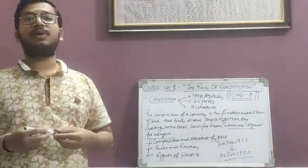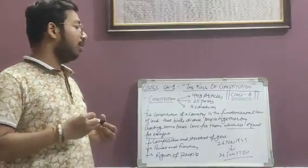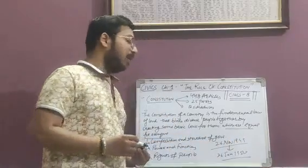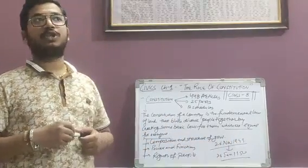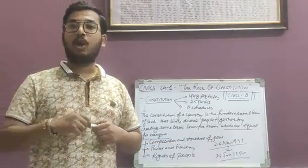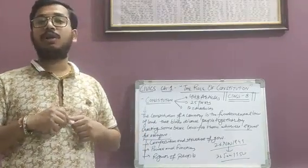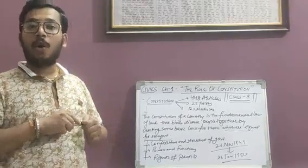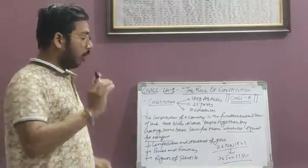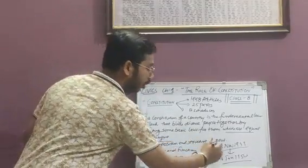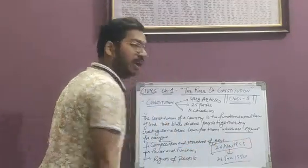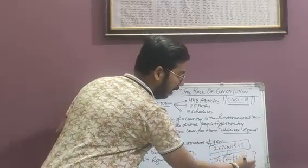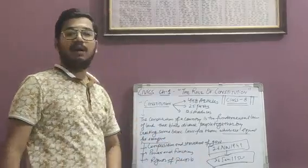Now we will talk about the history of the Constitution. A committee was set up to make the Constitution, headed by Dr. Bhim Rao Ambedkar, who was also called the father of the Constitution and was the first law minister of independent India. The Constitution was completed on 26 November 1949, but it came into execution on 26 January 1950, which is our Republic Day.